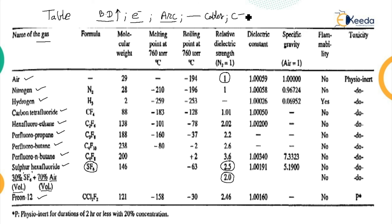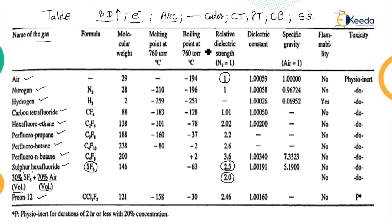Due to its high breakdown strength, excellent arc quenching property, and electronegative nature, SF6 gas is used in cables, current transformers (CT), potential transformers (PT), circuit breakers (CB), and metal-enclosed substations where the gas insulates the entire substation. SF6 is nowadays practically adopted and widely used due to these properties. This concludes the topic of practical considerations in using gas for insulation purposes.